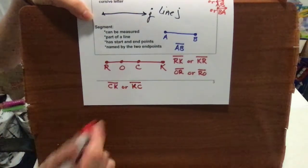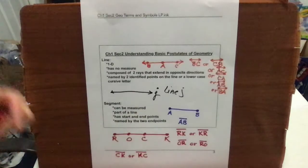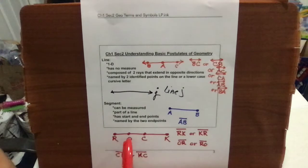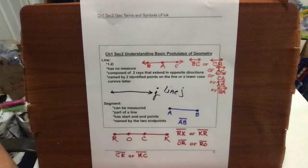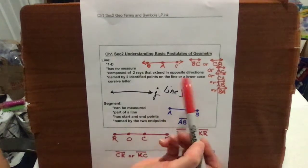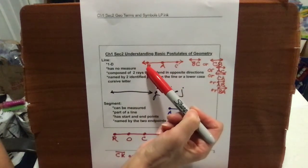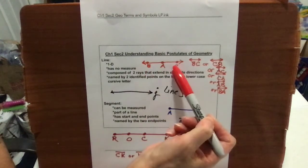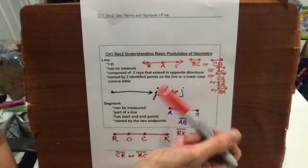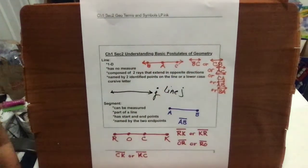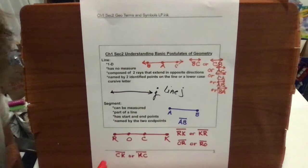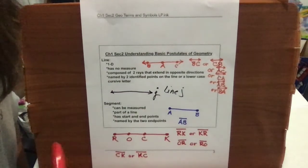Depending on what your problem involves, you identify what portion of a line segment you're looking at based on how it is written — that's where you zero in on the name. We also have segment OC or CO, which is only that measurable part. Unlike a line, when you say line BC or line AC, it means the entire line because a line is not measurable, but segments are measurable.